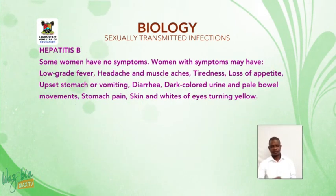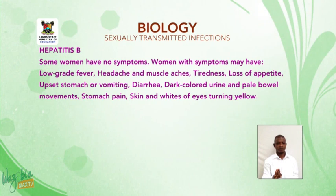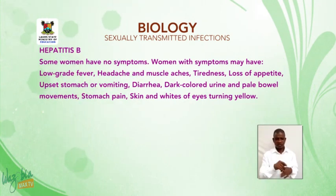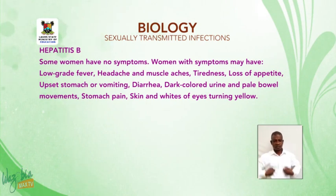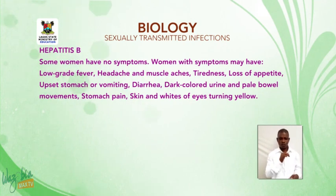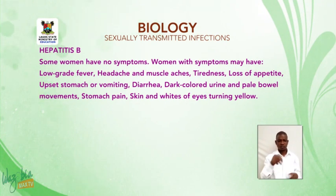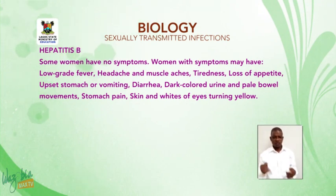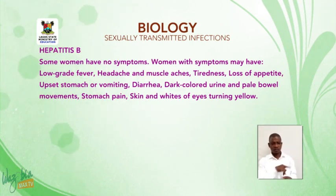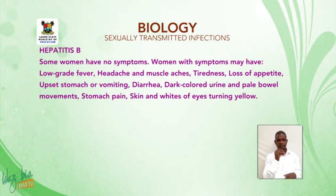Hepatitis B: some women have no symptoms. Women with symptoms may have low-grade fever, headache and muscle aches, tiredness, loss of appetite, upset stomach or vomiting, diarrhea, dark-colored urine, pain and pale bowel movements, stomach pain, and skin and whites of the eyes turning yellow.